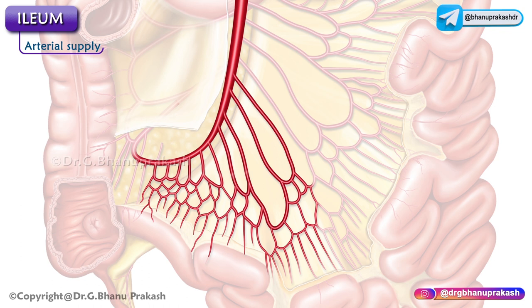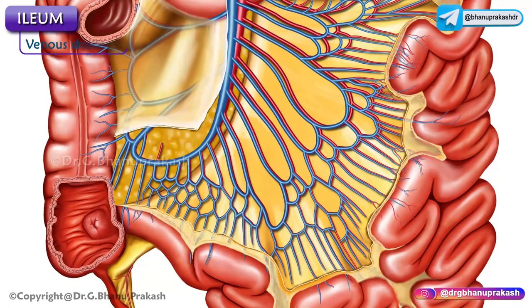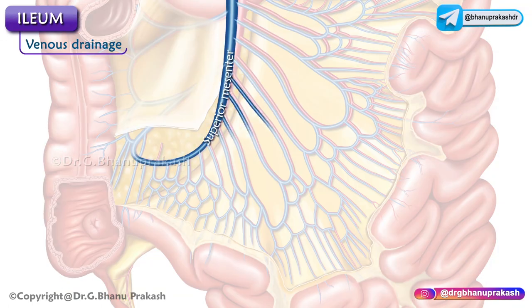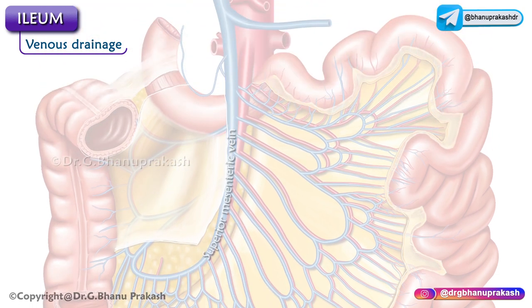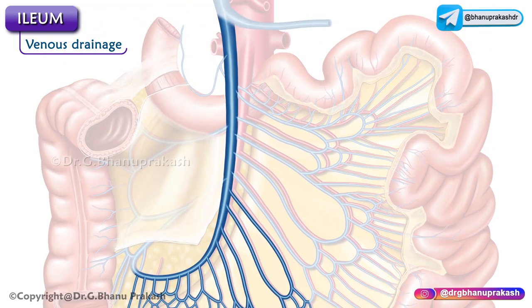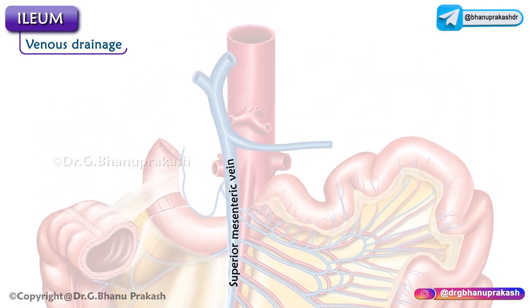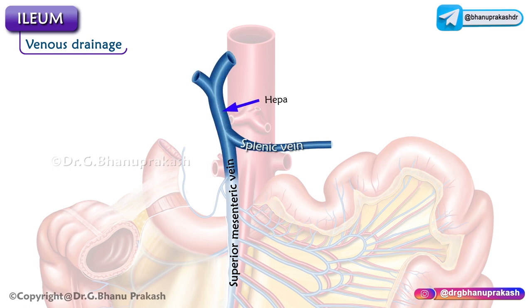Regarding venous drainage, the superior mesenteric vein drains the Ilium. In the root of the mesentery, the superior mesenteric vein lies anterior and to the right of the superior mesenteric artery. The superior mesenteric vein unites with the splenic vein to form the hepatic portal vein posterior to the neck of the pancreas.